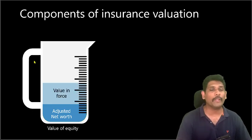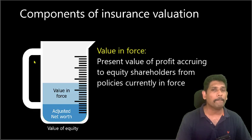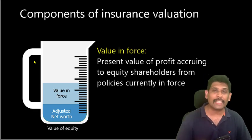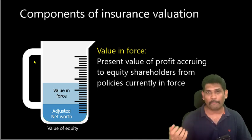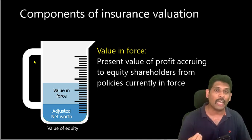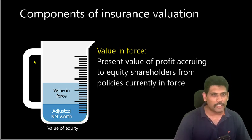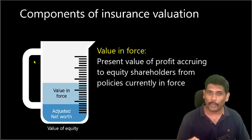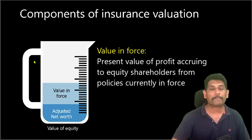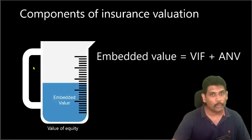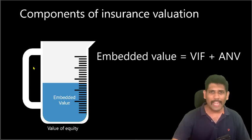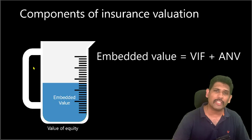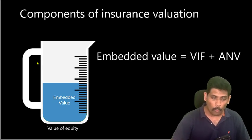The next component is value in force. Value in force is simply the present value of profits from existing business — from the policies that are currently in force, whatever profit we are going to be earning, what is the present value of that profit accruing to the equity shareholder. This number basically refers to the value addition to equity on account of policies currently in force. Value in force and adjusted net worth put together we call embedded value. Insurance companies themselves compute this number, get it certified by an actuary, and then report it.